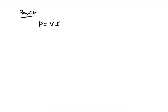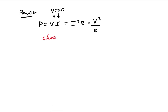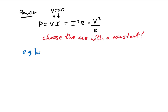Electrical power has three forms: P = VI, P = I²R, and P = V²/R. Choose the equation where the variable is constant. If resistors are in series, current I is constant, so use P = I²R. If voltage is constant (components in parallel), use P = V²/R.